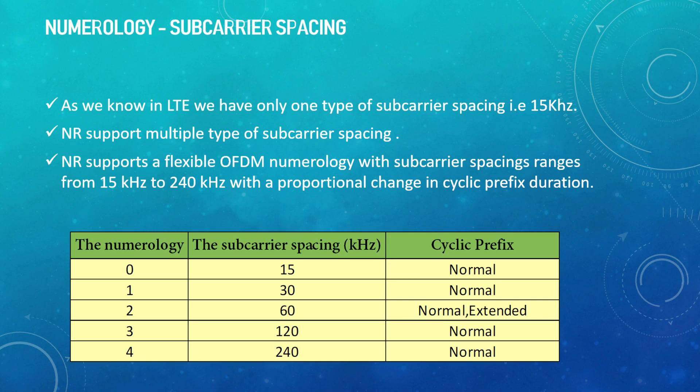5G basically supports multiple types of ranges of subcarrier spacing, that is from 15 kilohertz to 240 kilohertz, with a proportional change in cyclic prefix duration. So there is a change in cyclic prefix duration depending upon the subcarrier spacing.